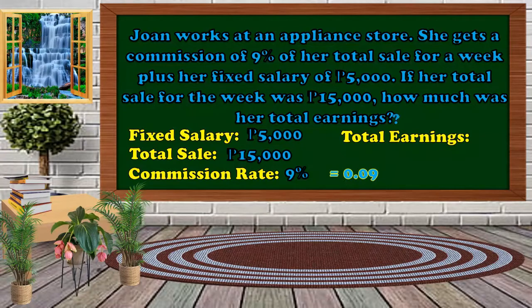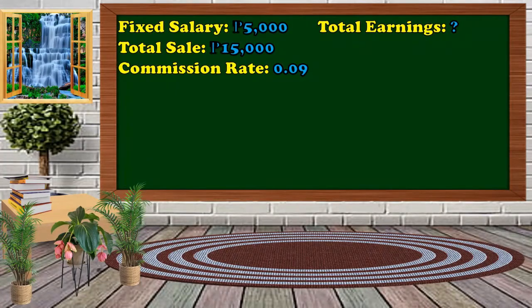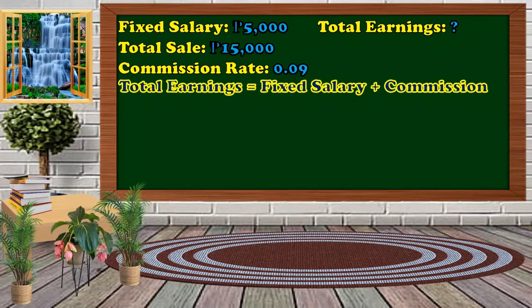The total earnings is what we're going to look for. We can solve the total earnings using this formula: total earnings is equal to the fixed salary added to the product of the total sale and the commission rate. We can also use: total earnings equals fixed salary plus the commission value.